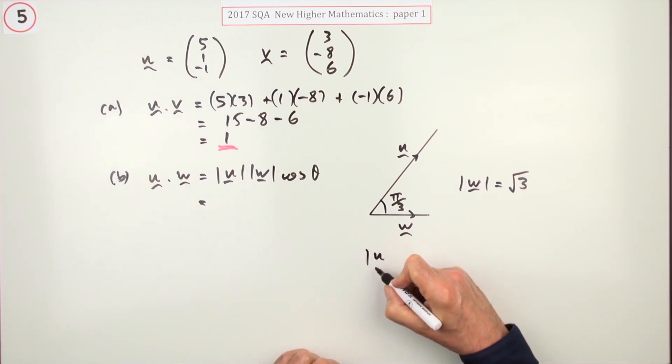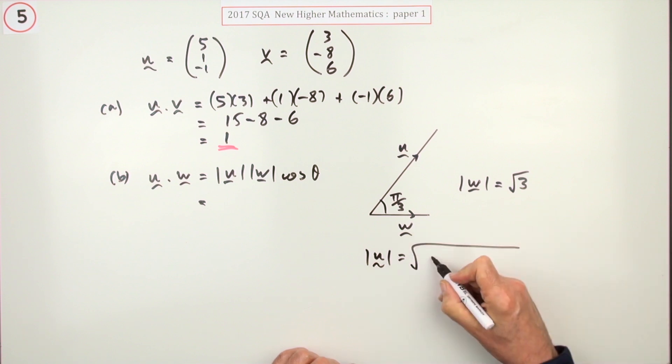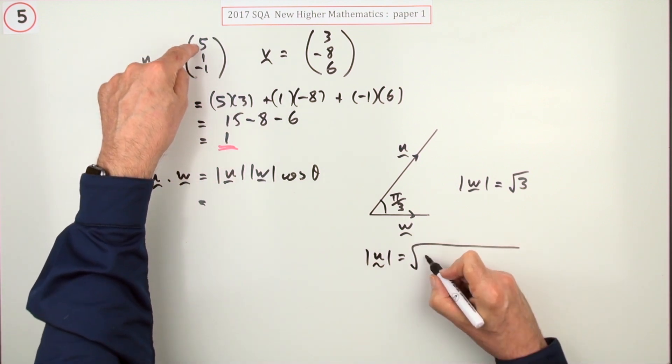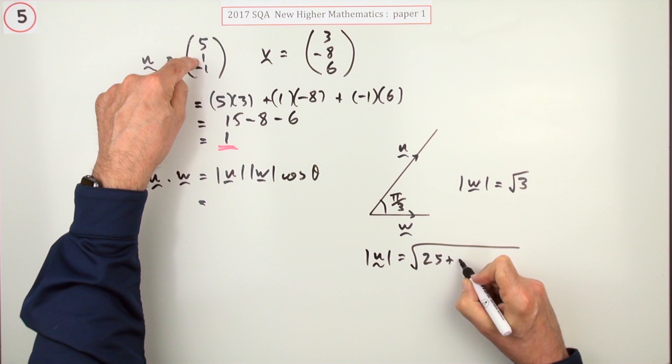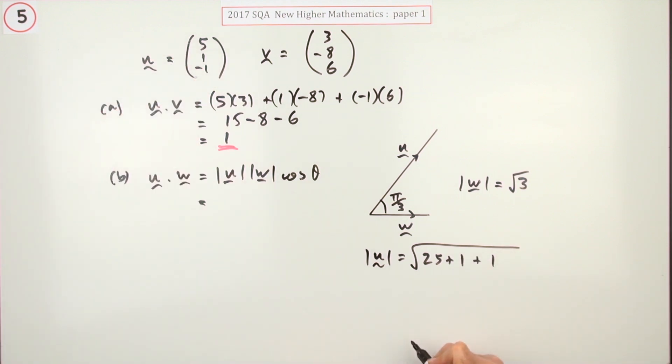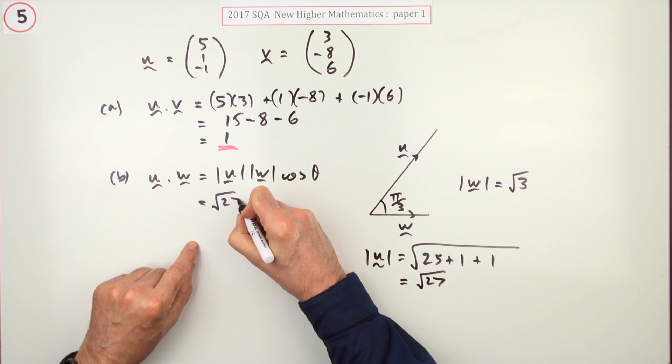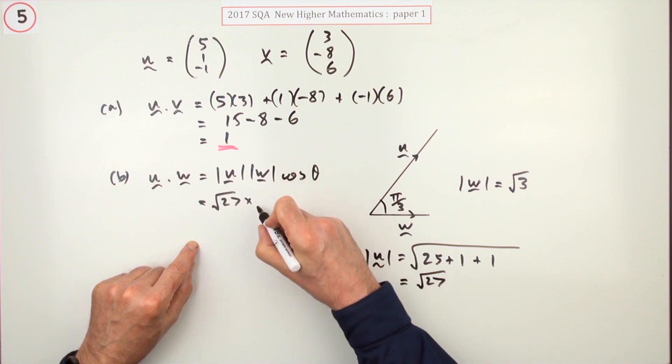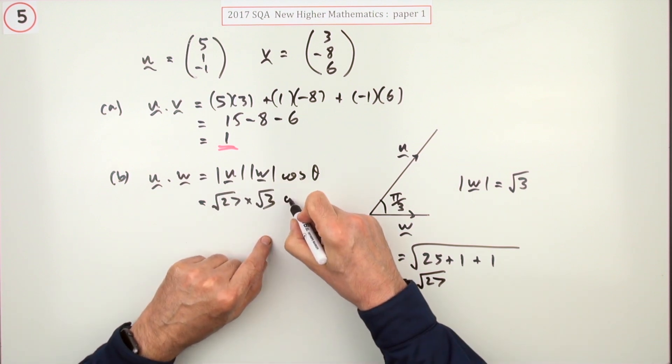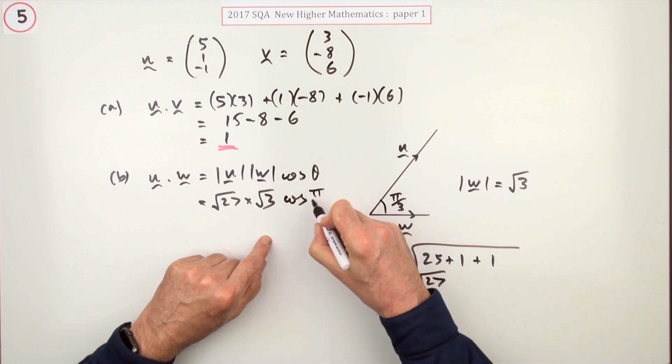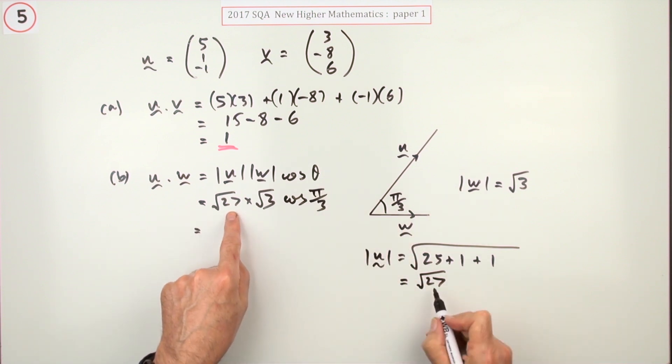So I'll just do that here. The magnitude of u will be the square root of square the components, and I'll just jump straight in: 25, 1, and 1. If you wish you can put 5 squared plus 1 squared plus negative 1 squared. So that's root 27 as it turns out. Root 27 is 9 times 3, so that's 3 root 3.